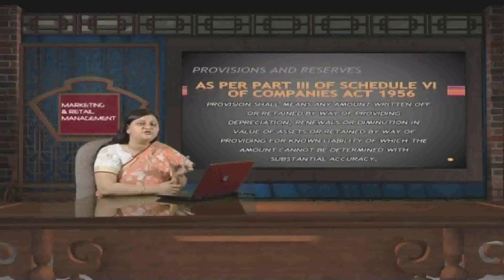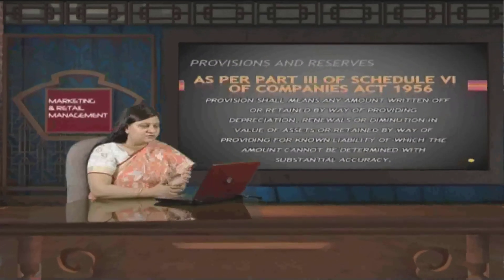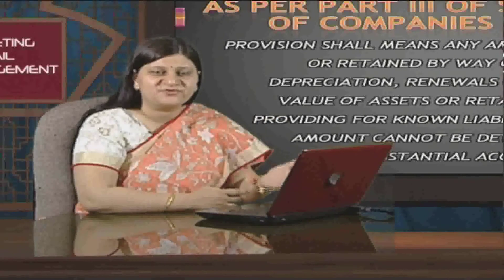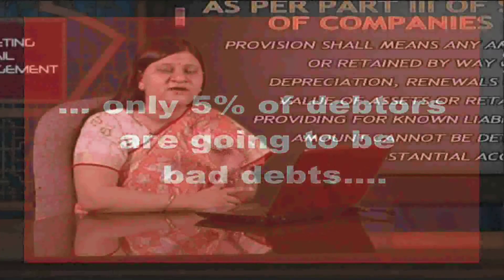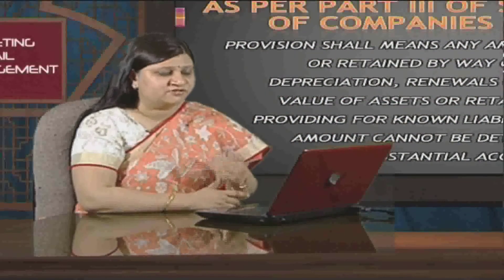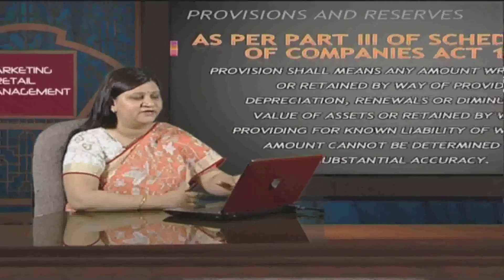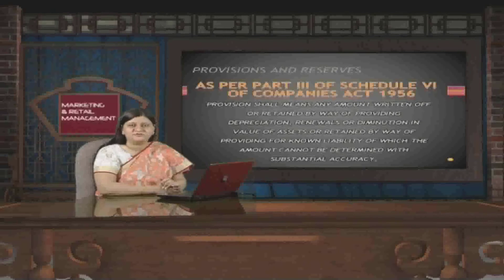The liability is known but we are not sure about the exact amount to be paid. So with substantial accuracy, using a mathematical formula, we ascertain that amount. For example, we make a provision for doubtful debts — analyzing past trends, if five percent of debtors are likely to be bad debts, we make a provision of five percent on the debtors. The liability is known but the exact amount is not, so we retain a value with substantial accuracy.